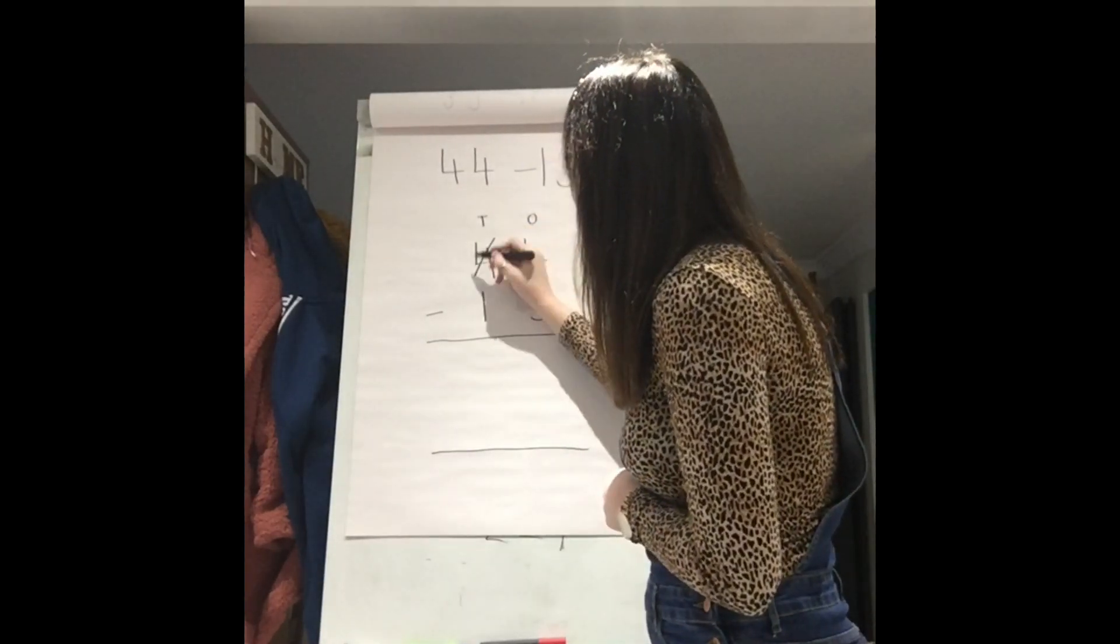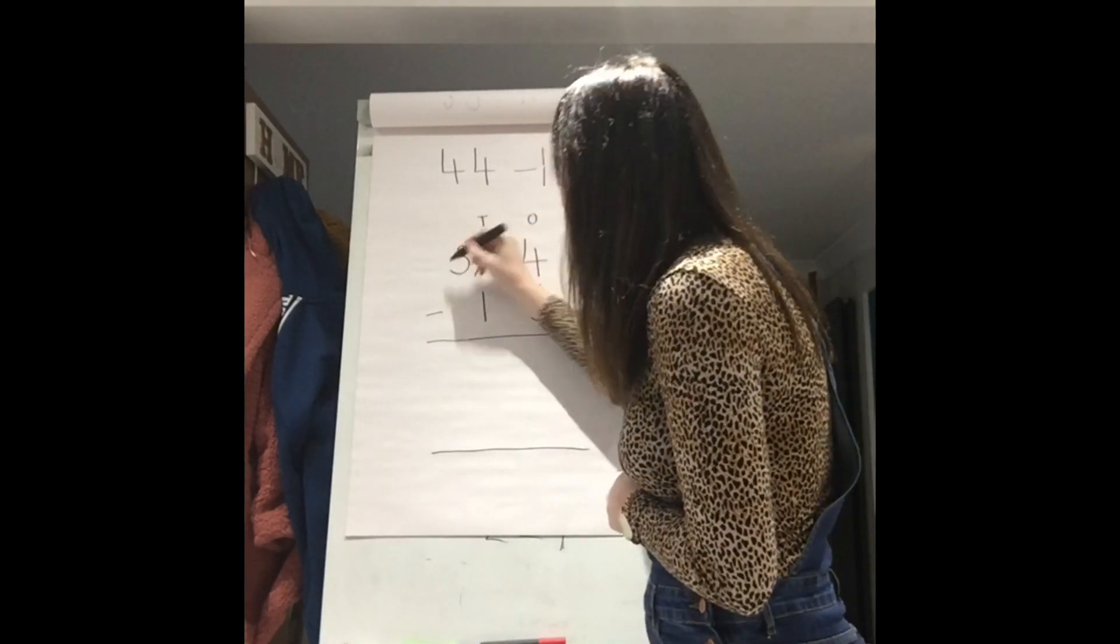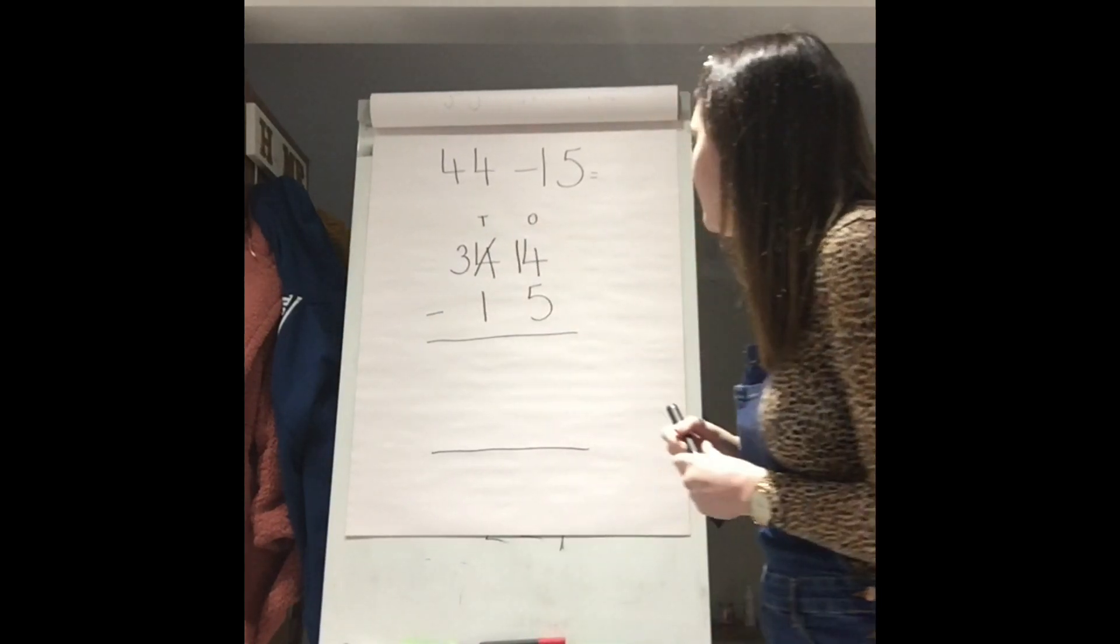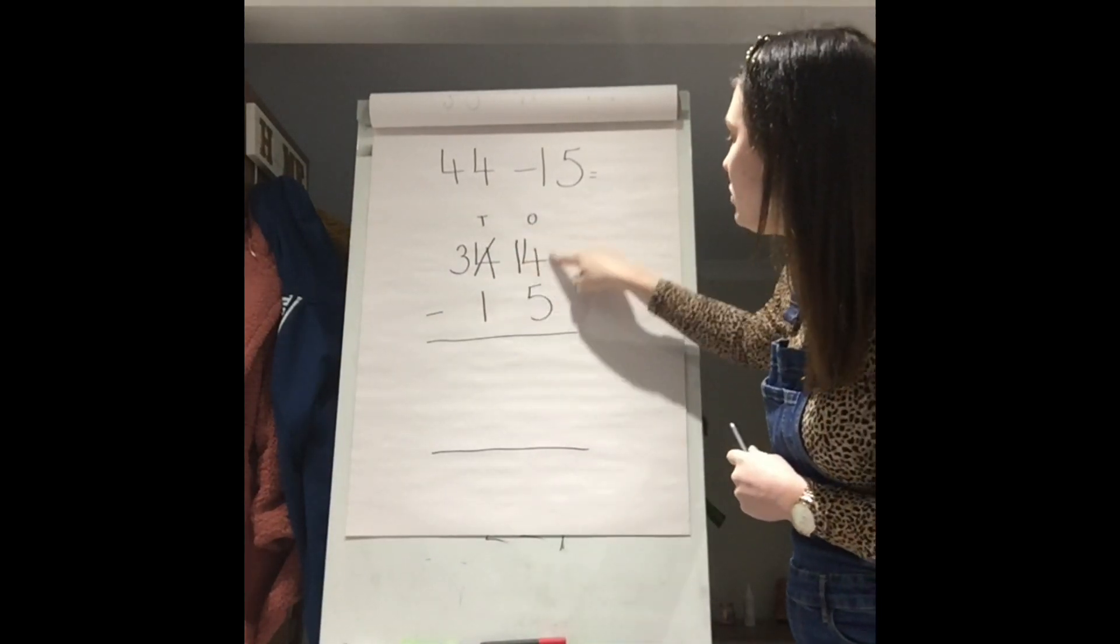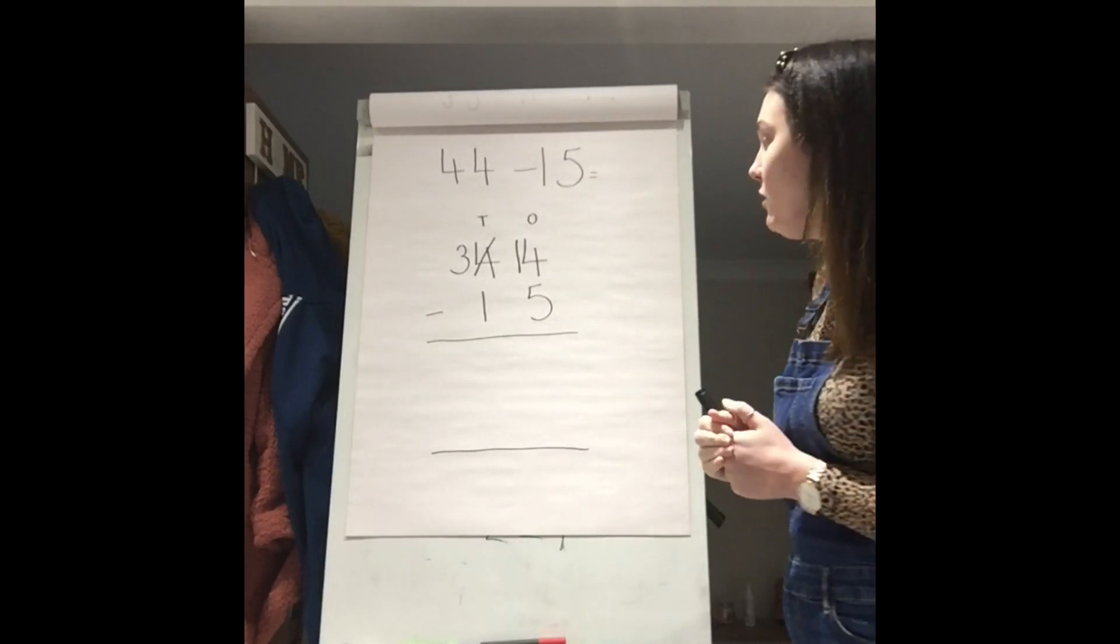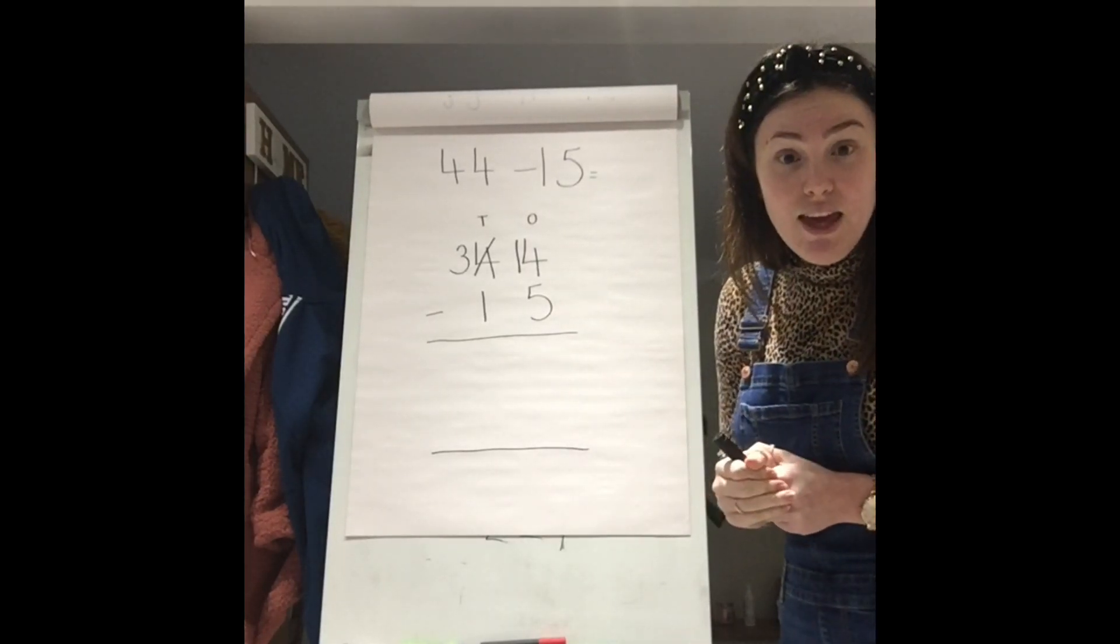So, our 40 then becomes 30 and our 10 goes here. So, we have 14 take away 5. And 14 take away 5 is 9.